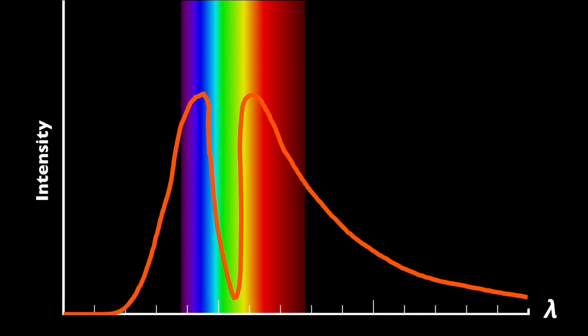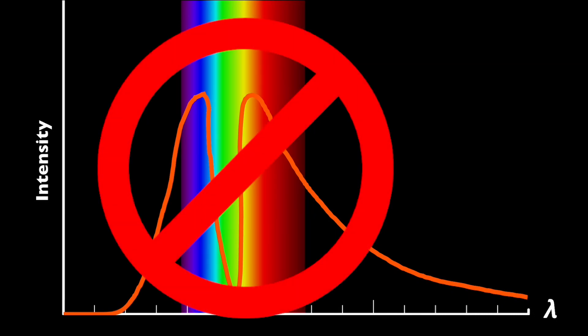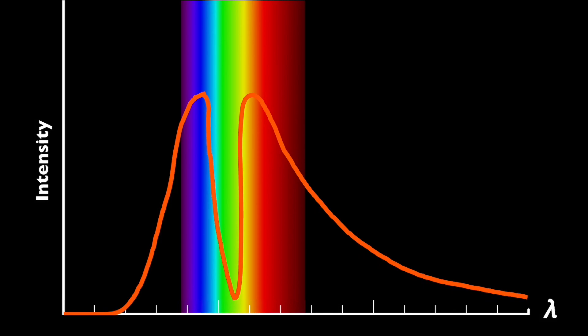We would only see purple stars if their blackbody curves had equal amounts of red and blue. But we know that this type of spectrum is impossible for a blackbody, because if it has almost equal amounts of both blue and red, then it's probably peaking in the green.